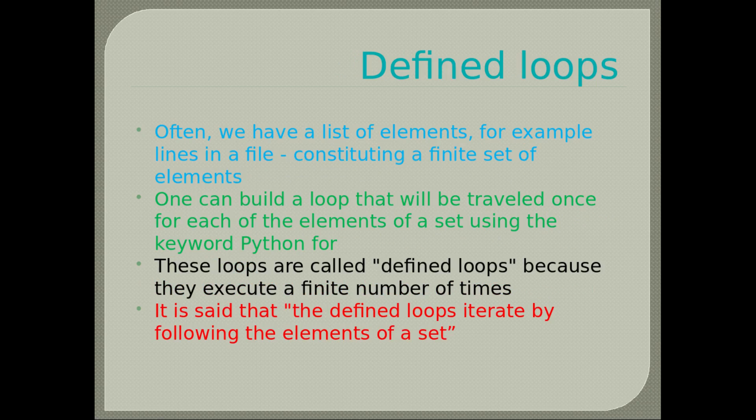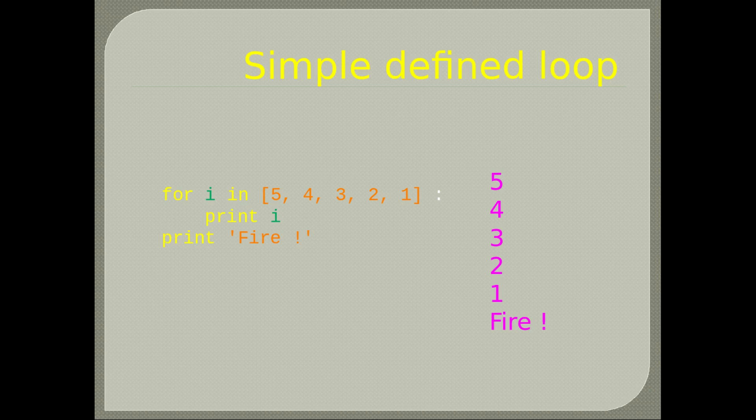Defined loops: often we have a list of elements, for example lines in a file, constituting a finite set. One can build a loop that will be traveled once for each element of the set using the Python for keyword. These loops are called defined loops because they execute a finite number of times. Simple defined loop example: the for loop goes through numbers 1 to 5 and prints each value, then the program prints 'fire' at the end.